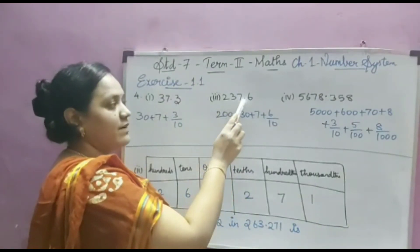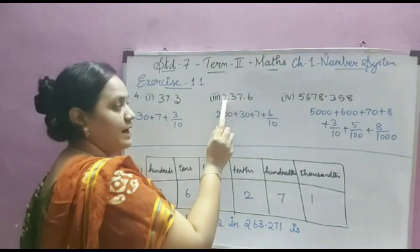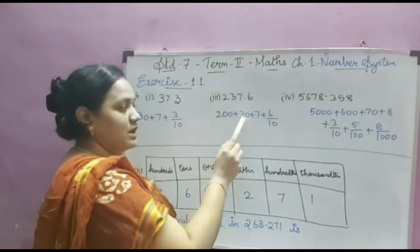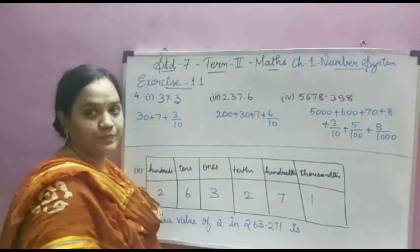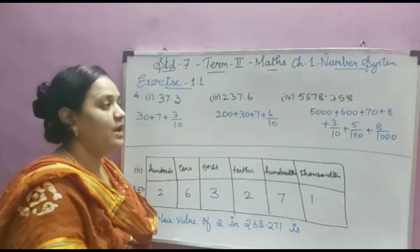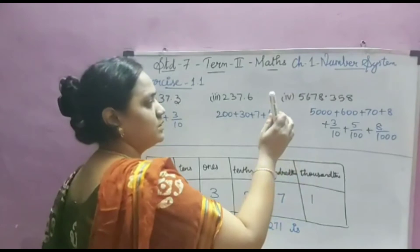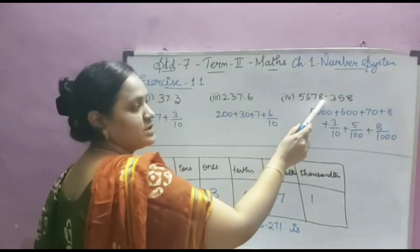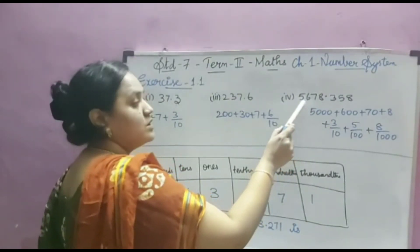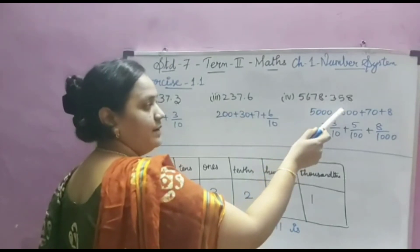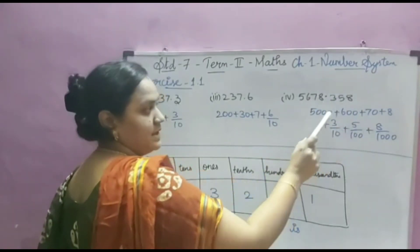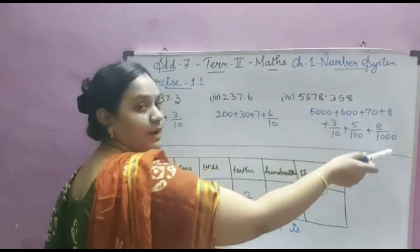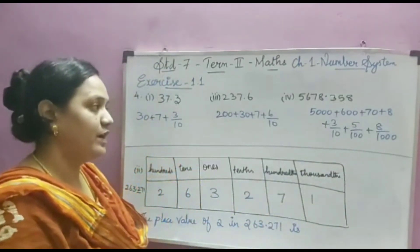The third option is 237.6. 237 means 2 is in the hundreds place, 3 is in the tens place, and 7 is in the ones place. So the expanded form is 200 + 30 + 7 + 6/10. Next, the fourth option is 5678.358. The place values are ones, tens, hundreds, thousands. So 5000 + 600 + 70 + 8 + 3/10 + 5/100 + 8/1000 is the expanded form.